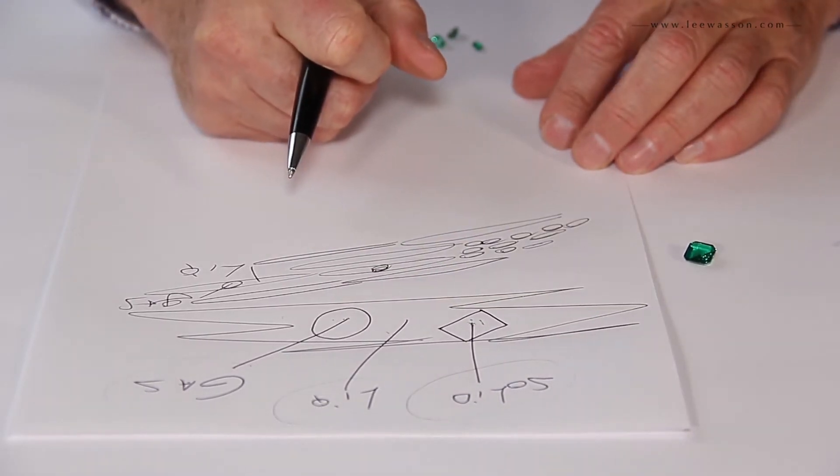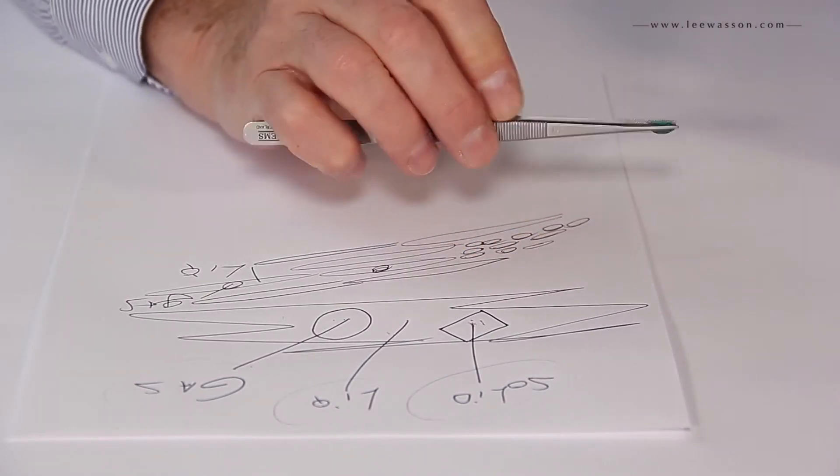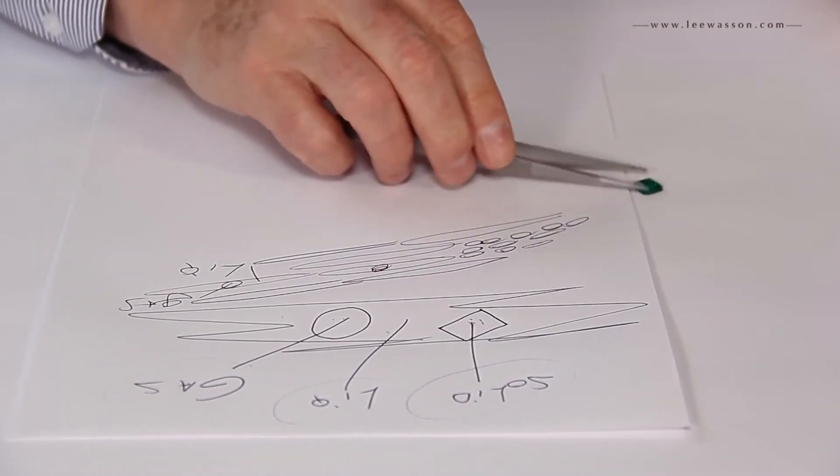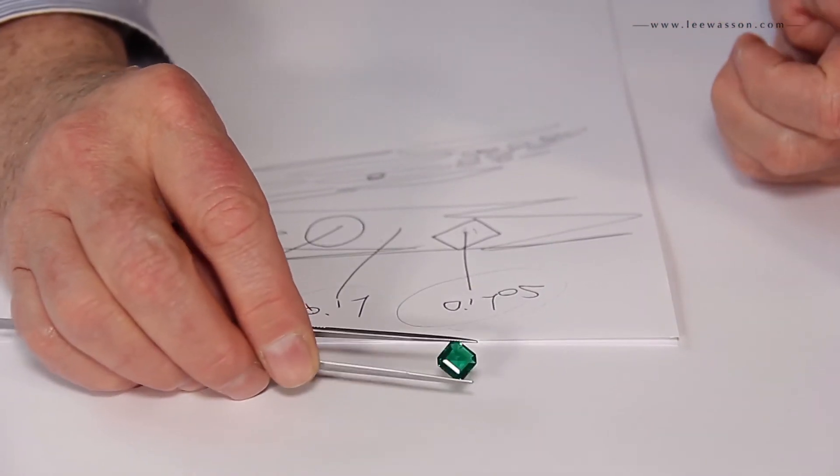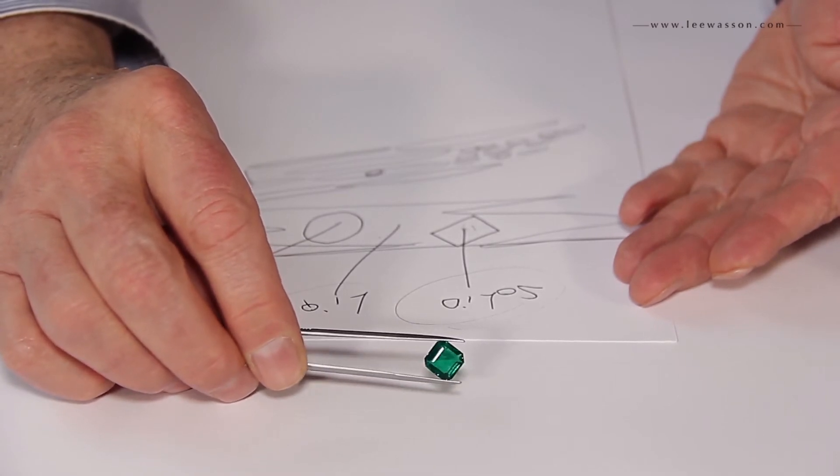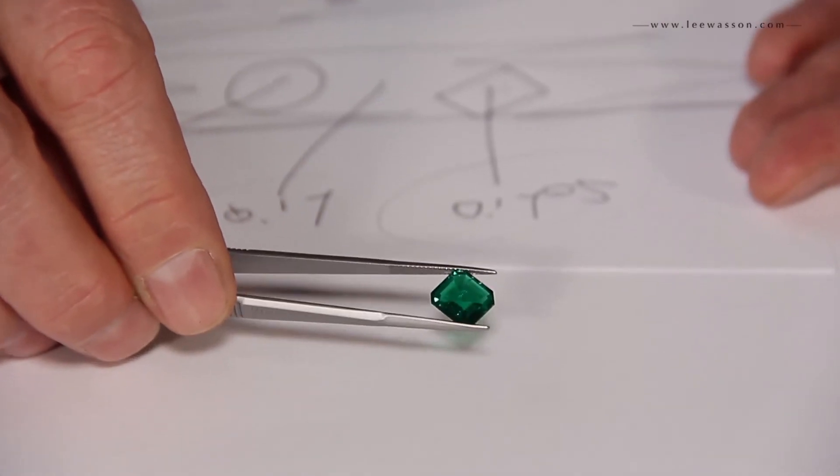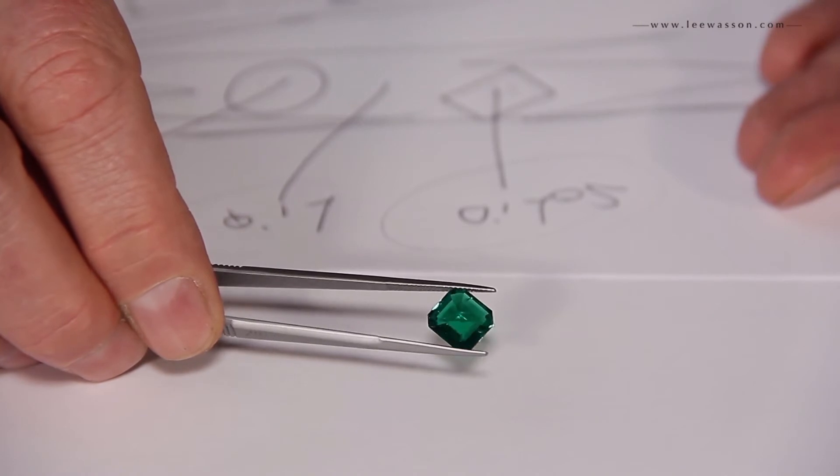Now this stone looks very dark, very clean, but maybe you can see some inclusions in there. It's a flat stone so we have a big window, but I'm going to move it a little bit so you can see that it has an inclusion inside of it.